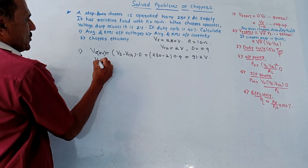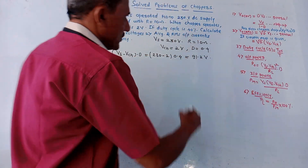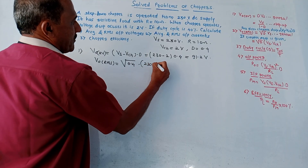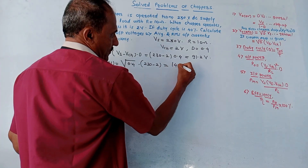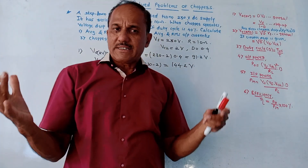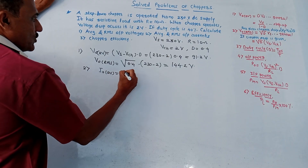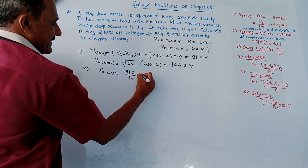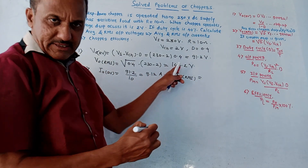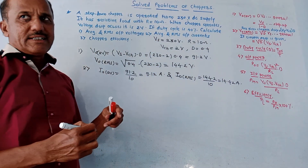Next, calculate V0 RMS using the formula with Vch: V0 RMS equals root D into (Vs minus Vch) equals square root of 0.4 into (230 minus 2), giving V0 RMS equals 144.2 volts. For the second part — average and RMS output currents — use current equals voltage upon resistance. I0 average equals V0 average upon R equals 91.2 upon 10 equals 9.12 ampere. I0 RMS equals V0 RMS upon R equals 144.2 upon 10 equals 14.42 ampere.